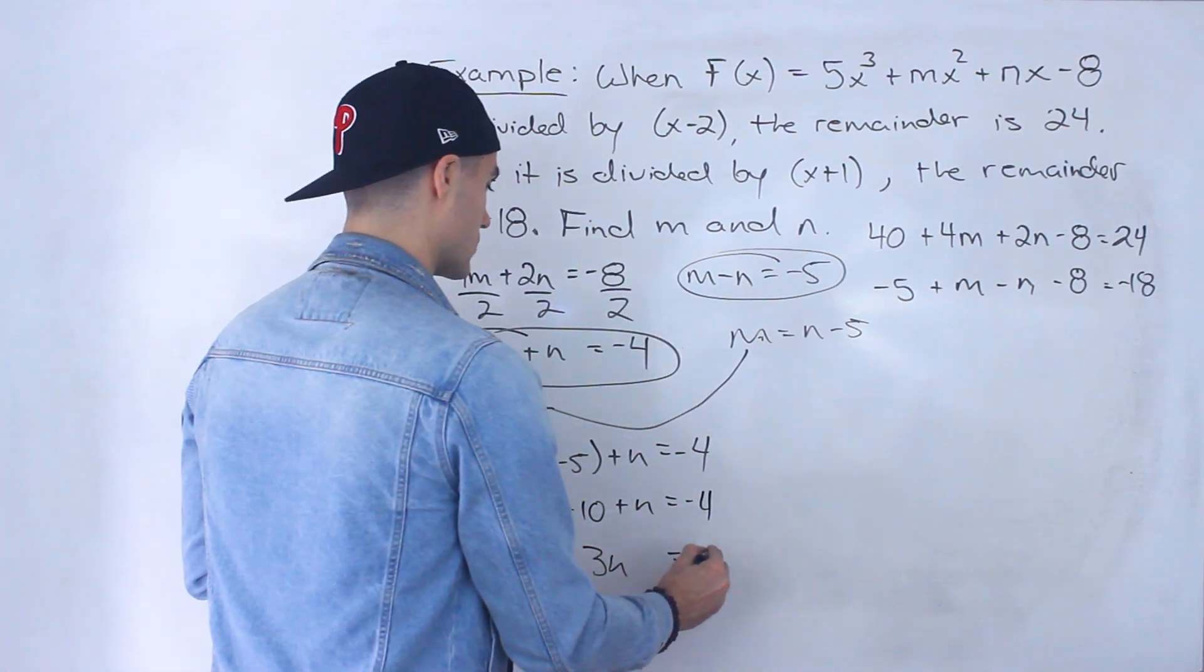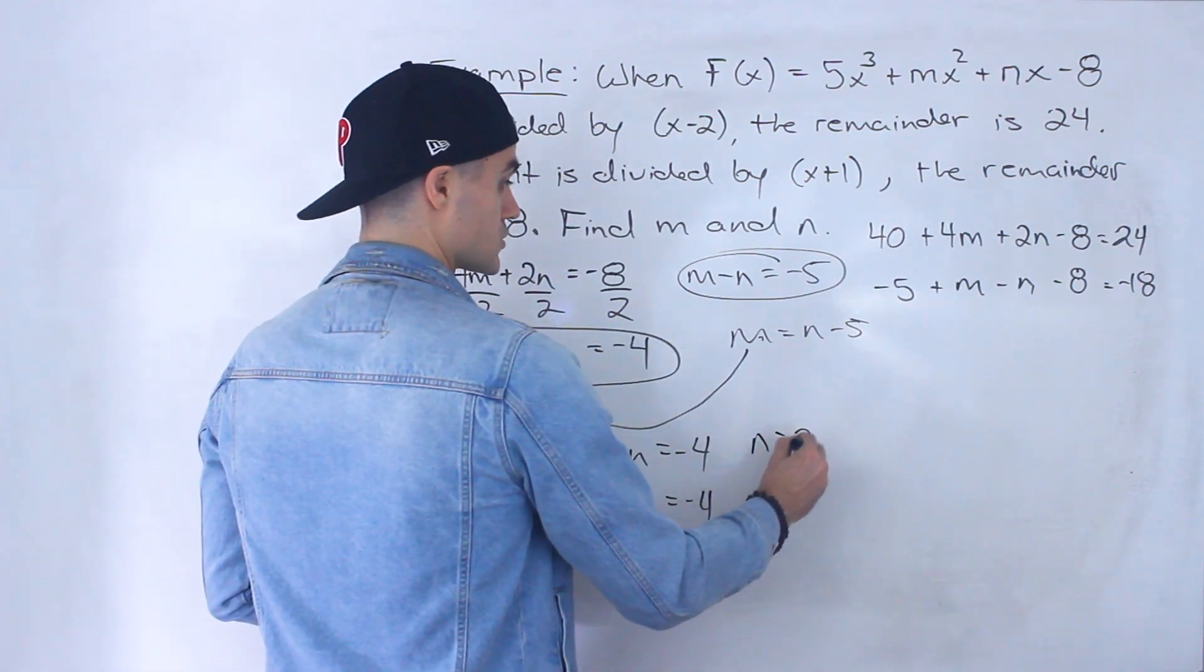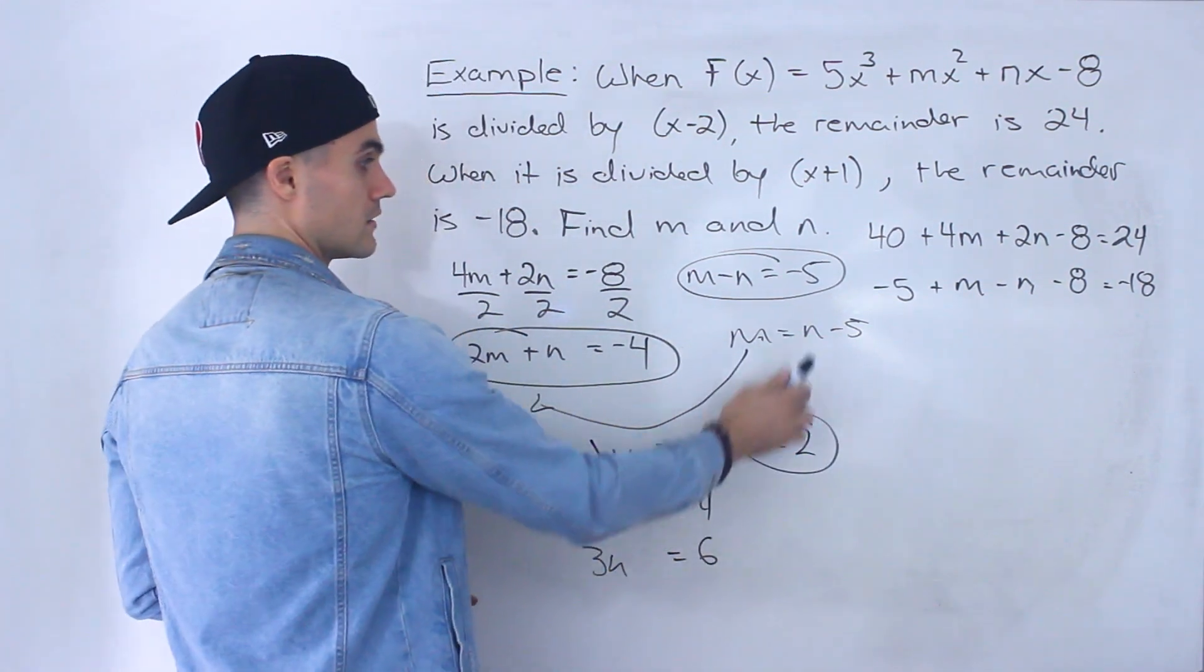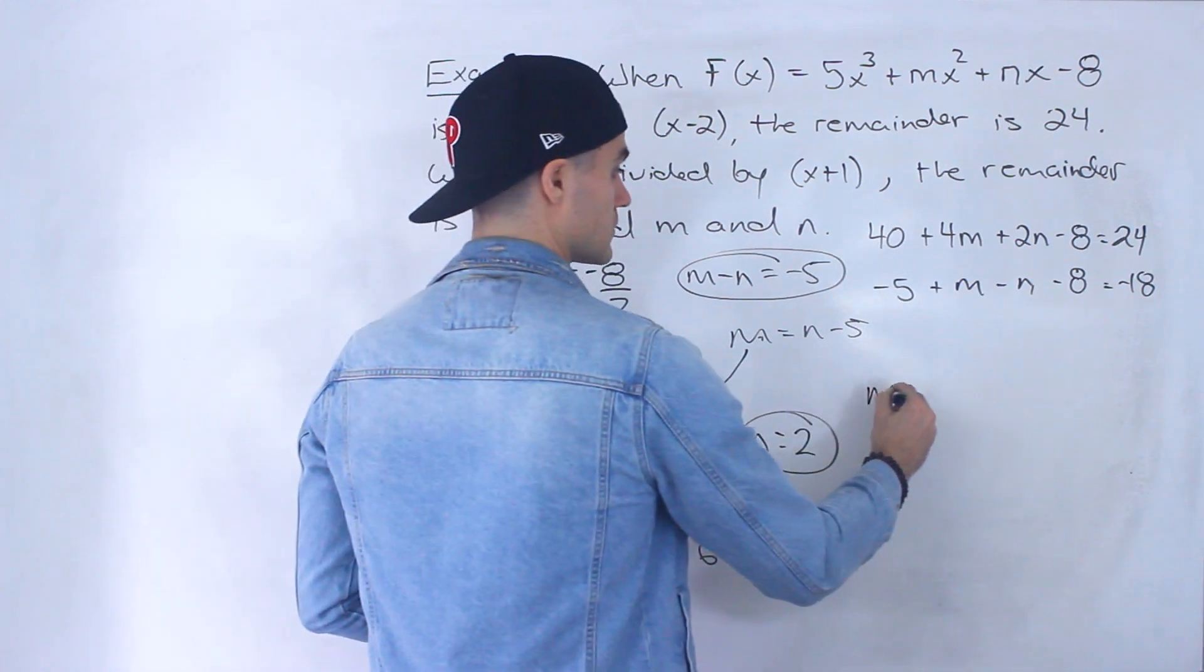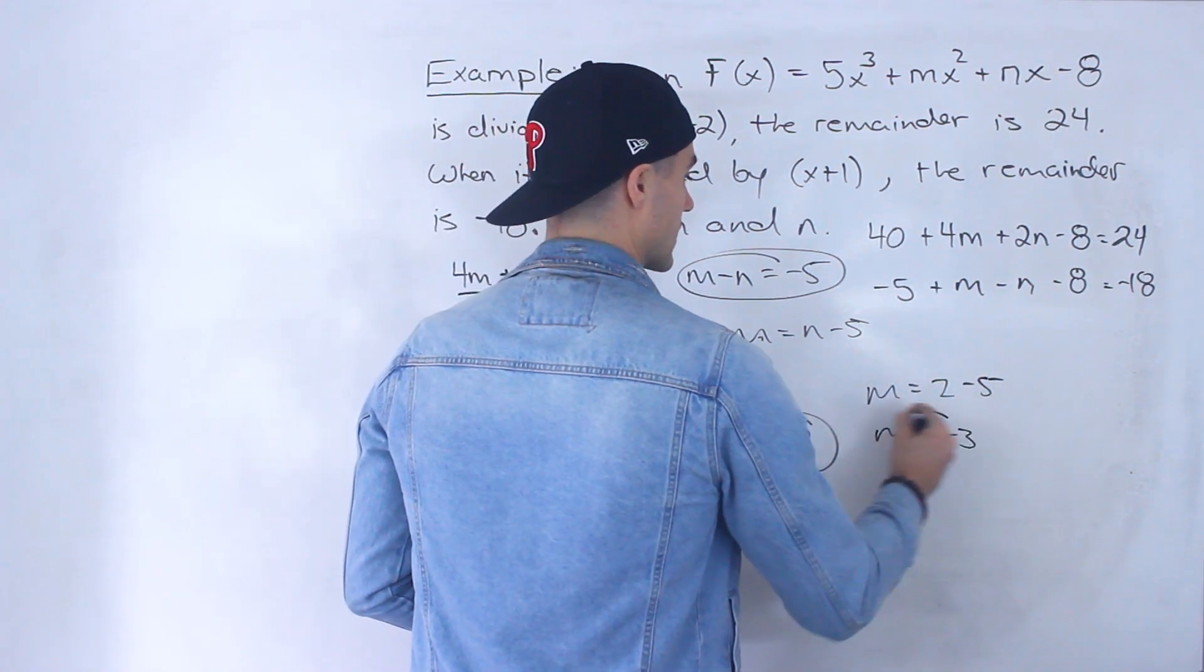3n equals 6. Divide both sides by 3. So n is equal to 2. And then I could plug in this n value here. So m is equal to 2 - 5, which is negative 3.